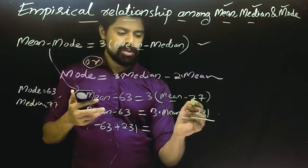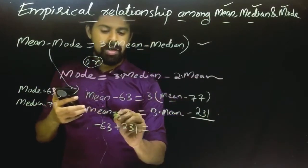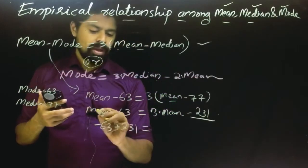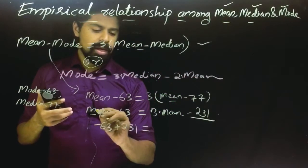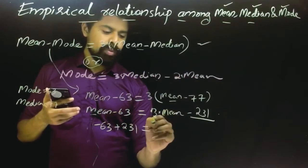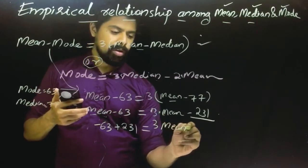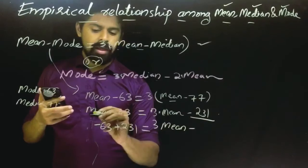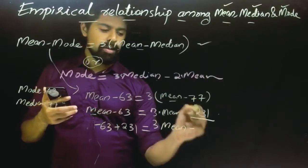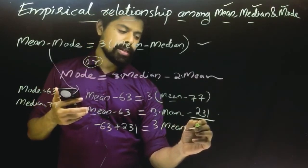Now we have minus 231 here, plus 231, minus 63 here. This means 3 into mean, then minus mean.